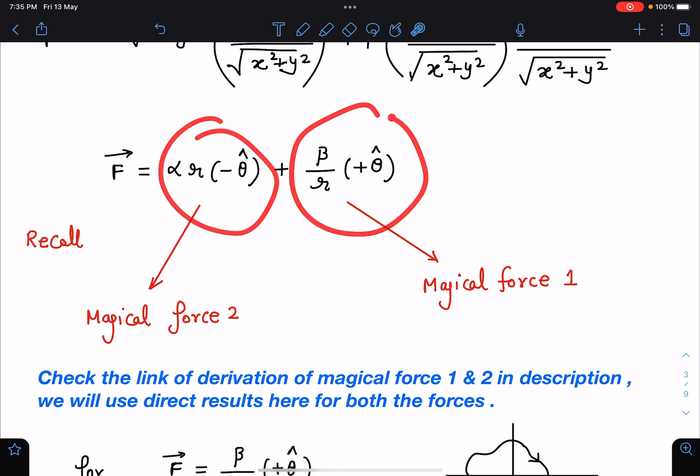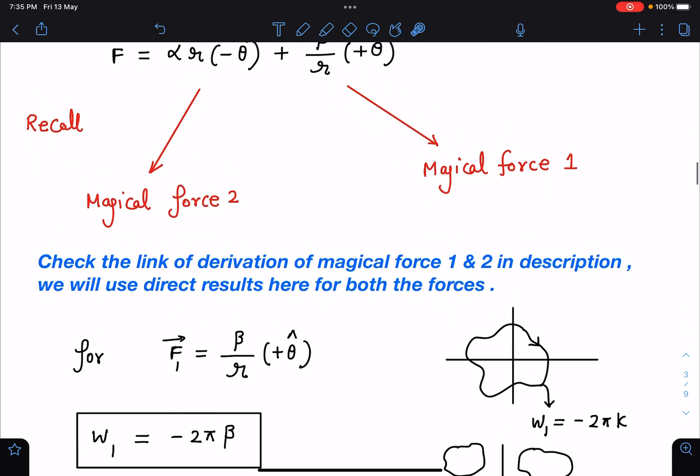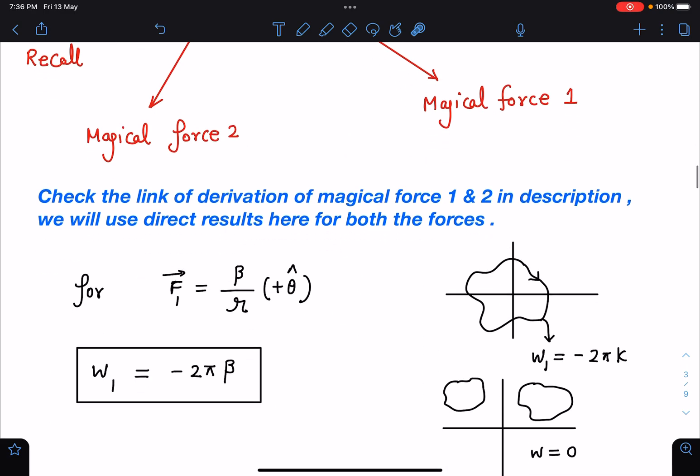I think most of my students would be able to solve this, those who have studied these forces. They will remember that directly we can solve these problems. Here you can see for this particular one, this magical force 1, this is the expression and in this case we get work done as minus 2 pi k.